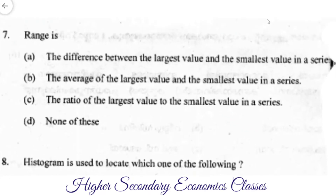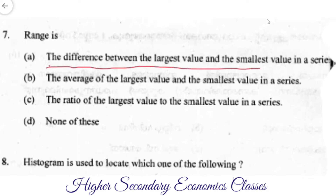Next question: Range is the difference between the largest value and the smallest value in a series. The second option is the average of the largest and smallest value. The third option is the ratio of the largest to the smallest value. The answer is the difference between the largest value and the smallest value.